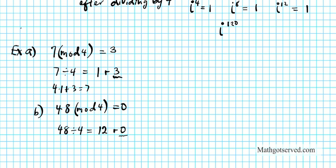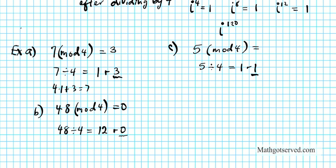Let's try two more examples. Example C: What is 5 modulo 4? All this is asking is: what is the remainder after 5 is divided by 4? 5 divided by 4 — 4 goes into 5 one time, remainder 1. Because 5 is 4 times 1 plus 1. So the remainder is 1, and 5 modulo 4 is simply 1.